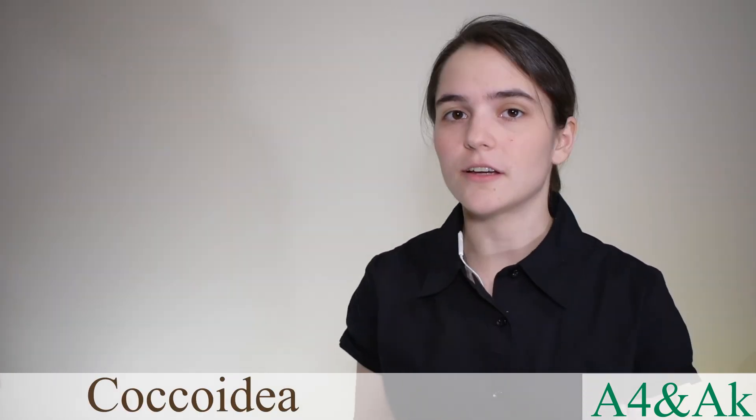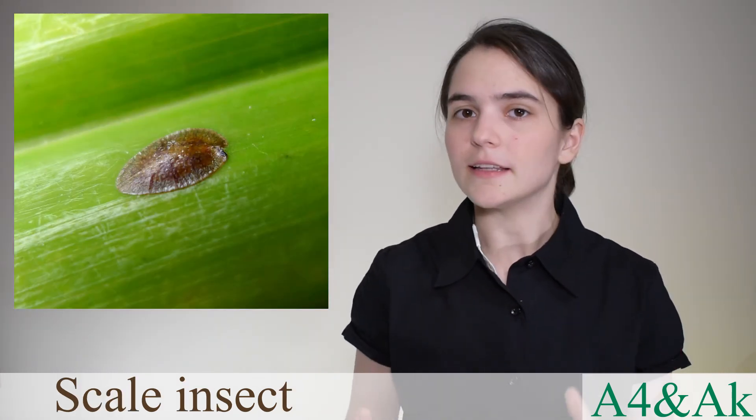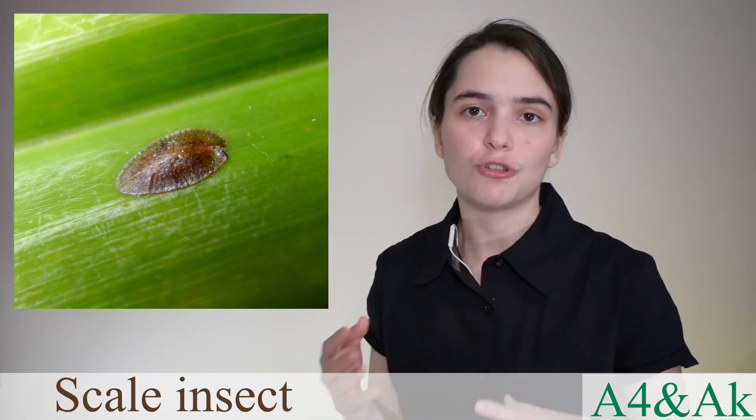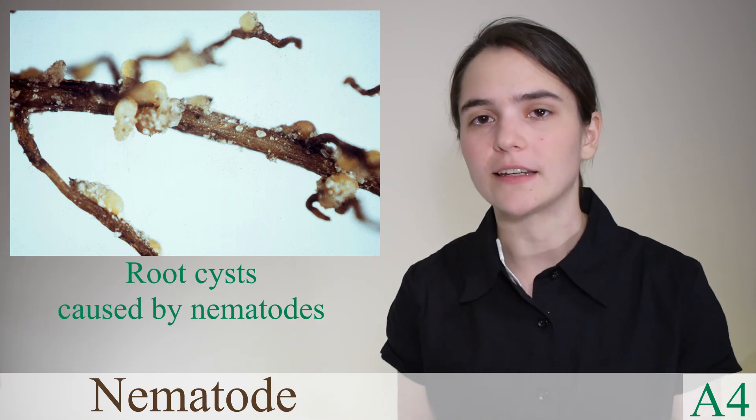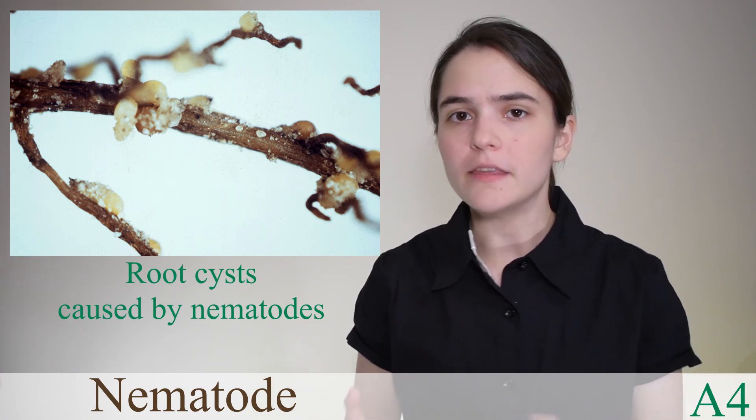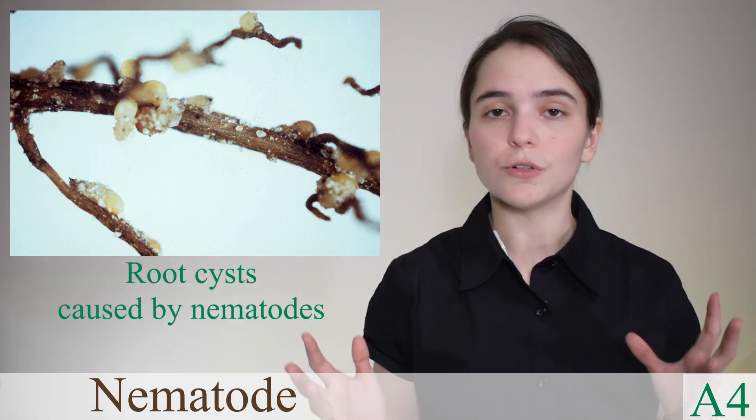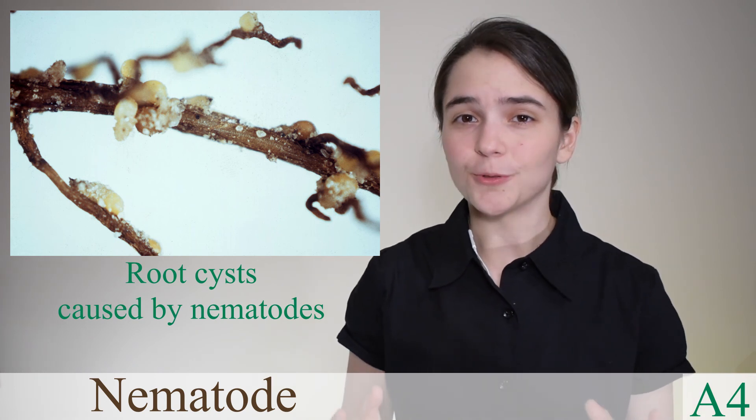Scale insects can be removed by spraying the plant with a mixture of rubbing alcohol and nicotine. If nematodes are detected, the roots of the cactus should be cut off with a sharp knife and then it should be replanted in fresh, clean soil until it grows new roots. The old soil should be sterilized and the old roots burned.